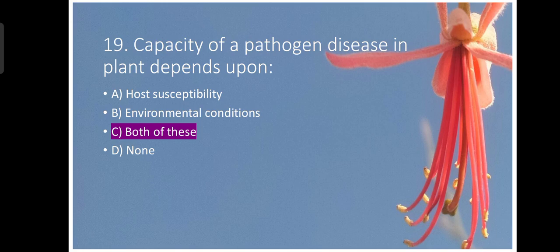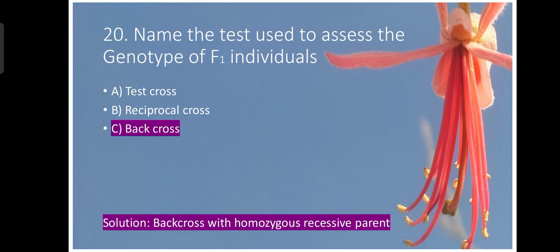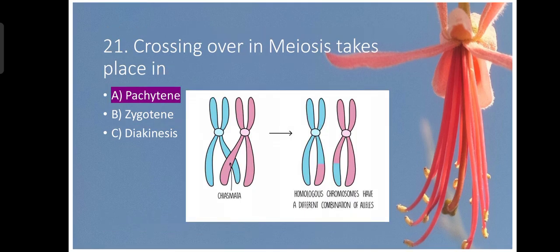Capacity of a pathogen disease in plant depends upon host susceptibility as well as environmental conditions. So both of these are the correct answers. Question number twenty. Name the test used to assess the genotype of F1 individuals. The test name is back cross solution. Back cross with homozygous recessive plant.